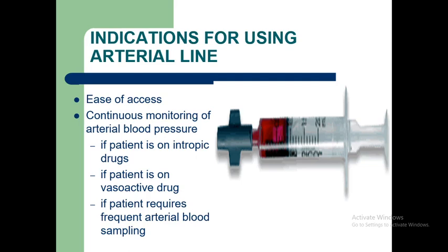Indications for using an arterial line include ease of access, continuous monitoring of arterial blood pressure — especially when the patient is on inotropic or vasoactive drugs — and when the patient requires frequent arterial blood sampling.